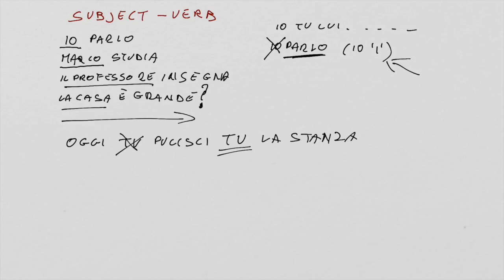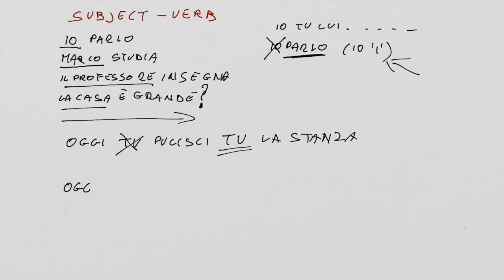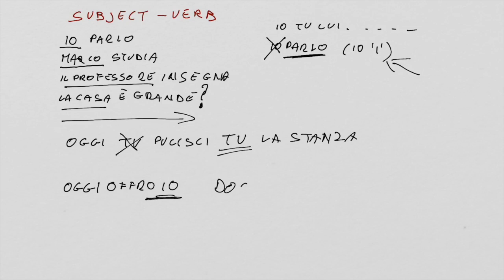This is the case of verbs such as 'offrire' and 'pagare', which always convey some emphasis when they mean to treat someone to something. 'Today I treat you to coffee, tomorrow you pay.' You say 'oggi offro io' — so you put 'io' after 'offro'. 'Domani paghi tu' — so you put the subject after the verb 'paghi'.